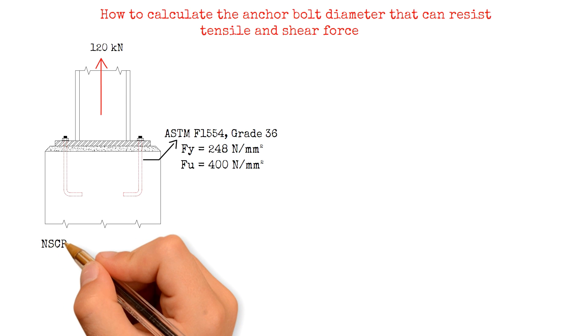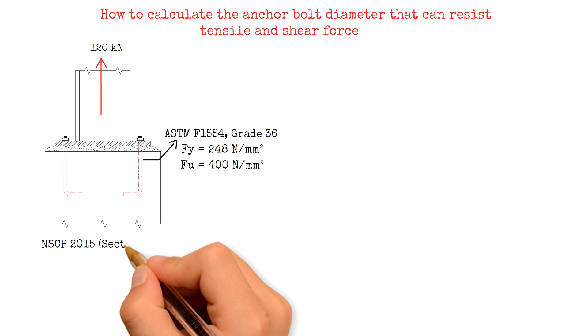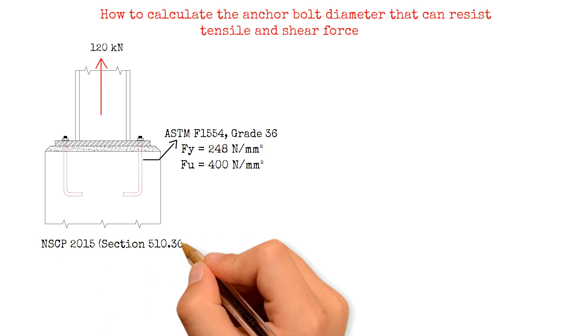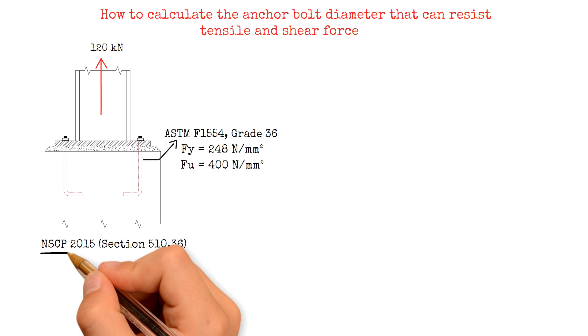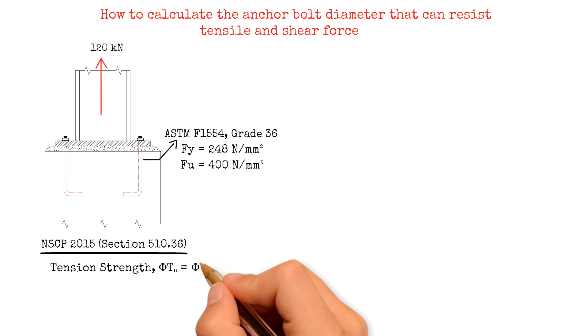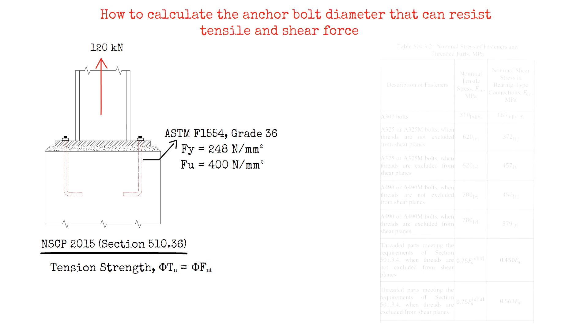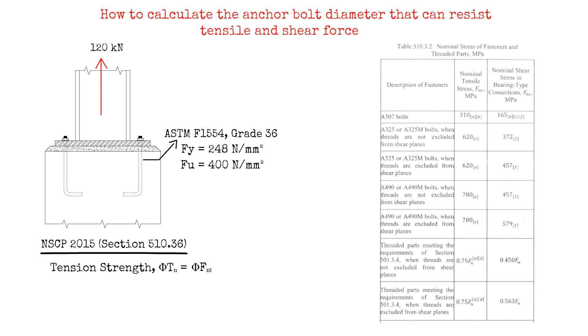according to section 510.36 of the NSCP 2015, which is also derived from ACI, the design tension strength equals the reduction factor φ multiplied by the nominal tensile stress FNT, which can be obtained from table 510.3.2, multiplied by the tensile area of the anchor bolt that is given in this table.